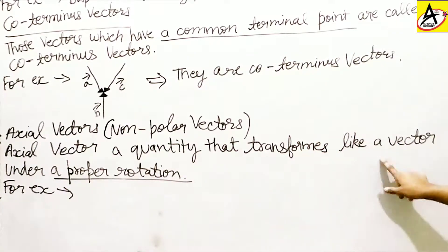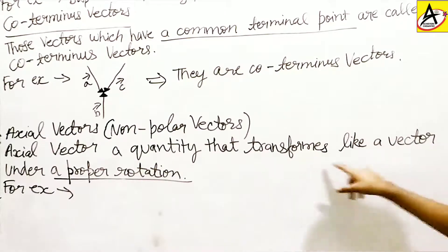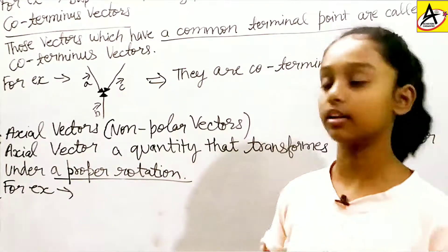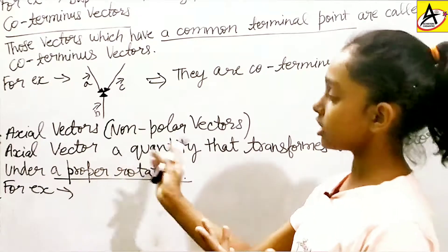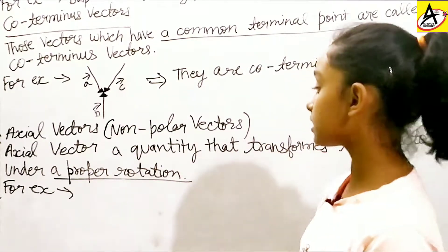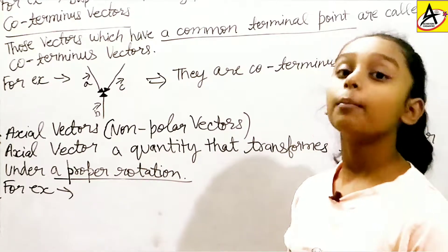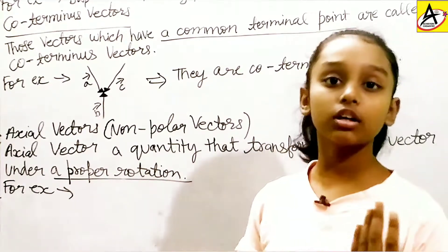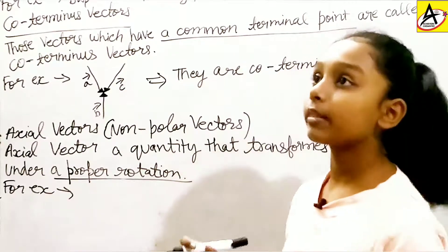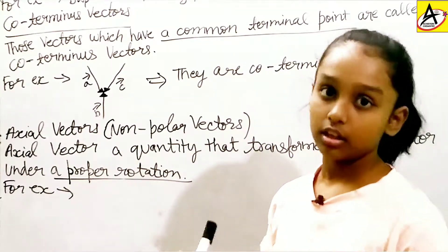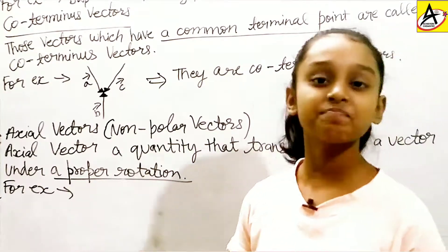Axial vector is a quantity that transforms like a vector under a proper rotation. It is simply talking about rotation — it tells us about the axis of rotation. Its main work is to represent the rotational effect and act along the axis of rotation.